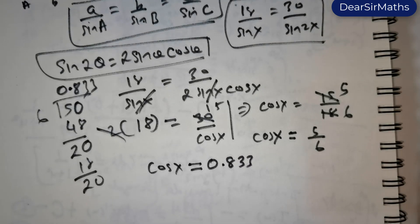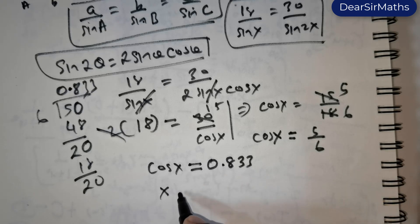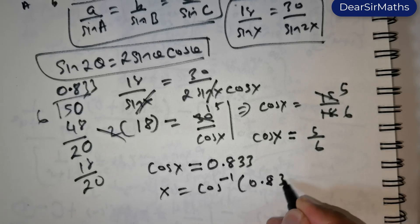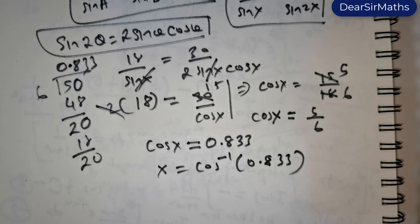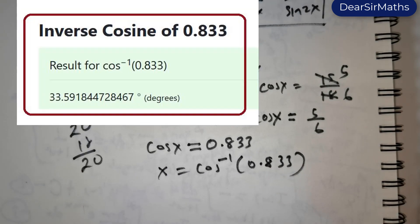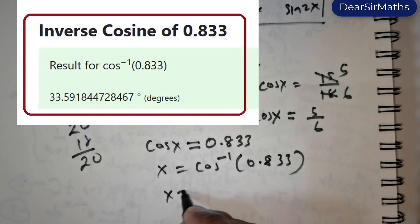Now we need to get the value of x. So x is actually equal to cos inverse of 0.833. Now you can use a calculator and find the value of cos inverse of 0.833.